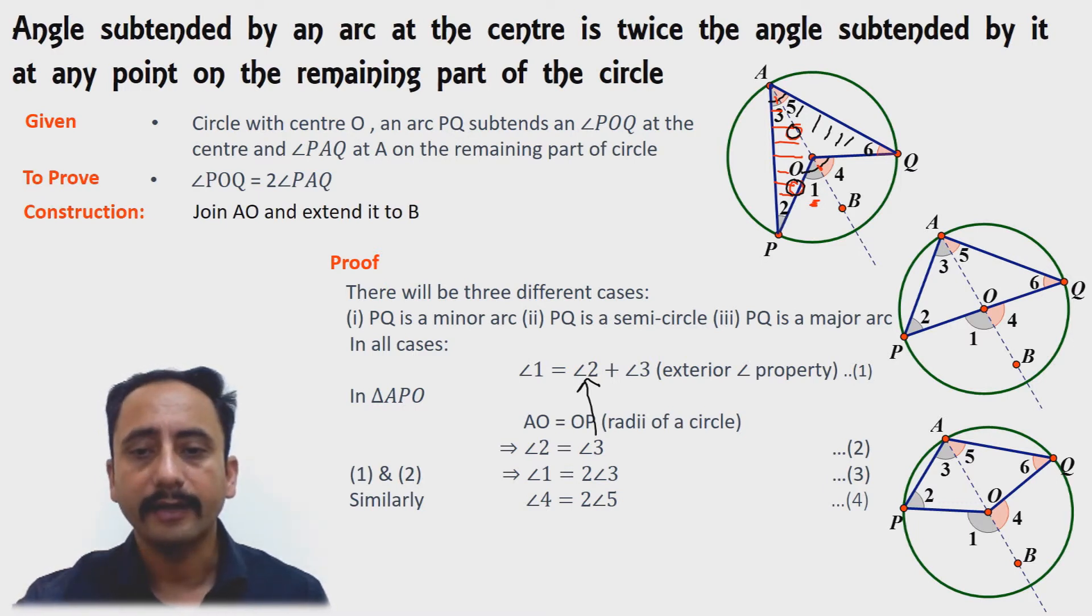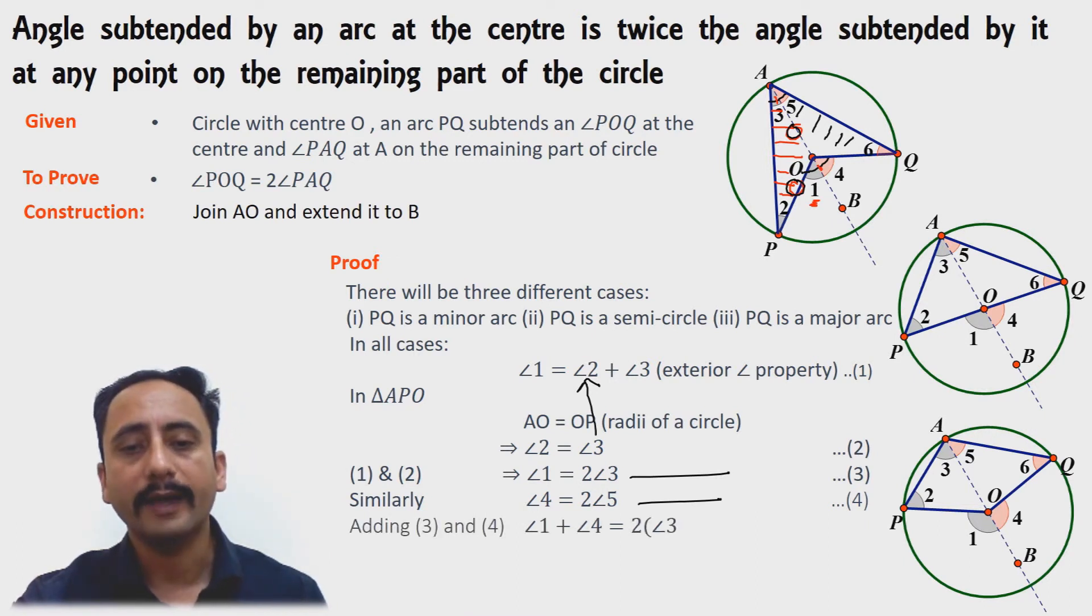If I add equation number 3 and equation number 4, we will get angle 1 plus angle 4 equals 2 times angle 3 plus 5. Angle 1 plus 4 is nothing but angle POQ.